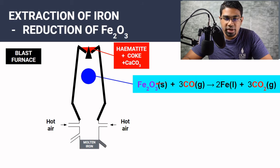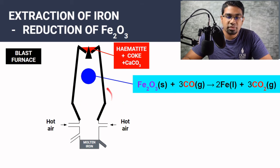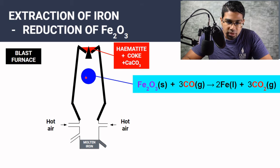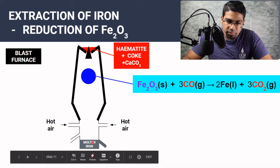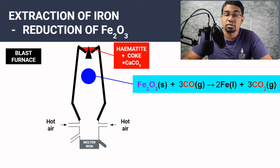Carbon monoxide reacts with iron(III) oxide to form iron and carbon dioxide gas. The iron is in liquid form because the high temperatures inside the blast furnace have already melted it. Molten iron drops down to the bottom and is drained out — this is where we get our iron. The carbon dioxide produced here is a waste gas.